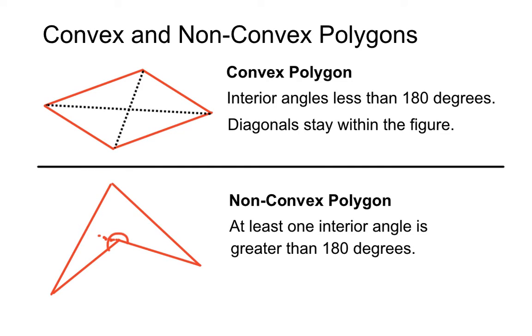And also, if you have a look at the diagonals in non-convex polygons, at least one of the diagonals is outside of the figure itself. Now this first diagonal we're going to have a look at is entirely in the figure.